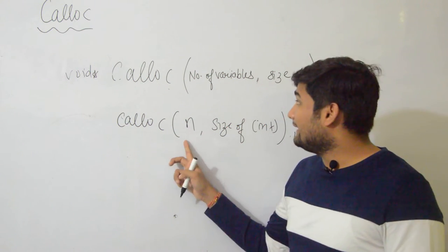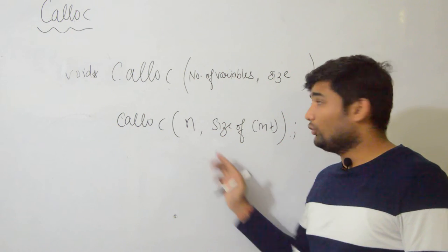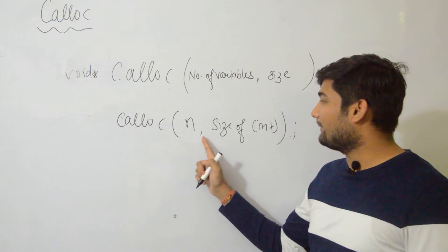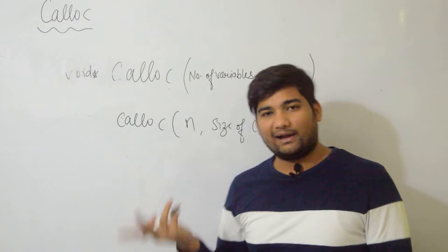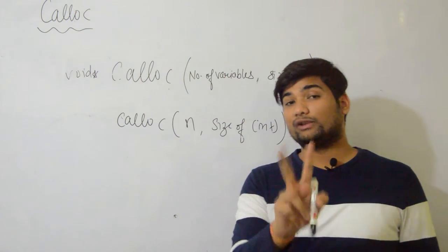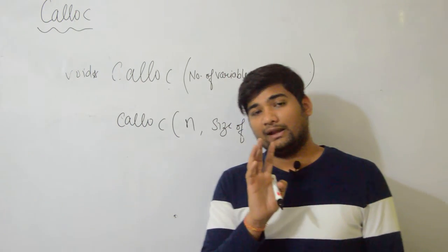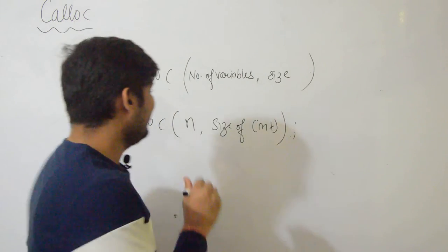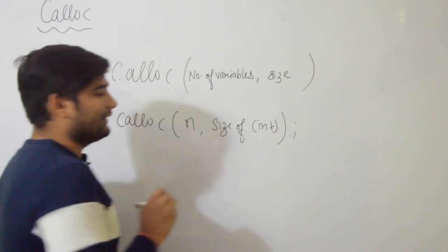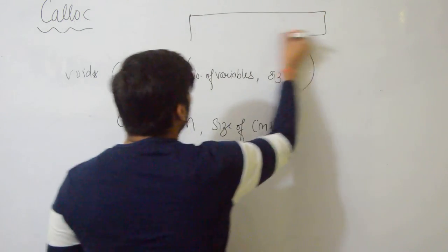First is number of variables, second is size of variables. So one difference is syntax - what you write as n multiplied, you now write as n comma. The second difference is very important.